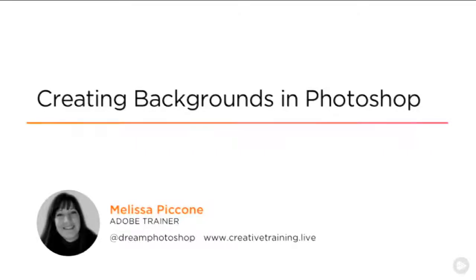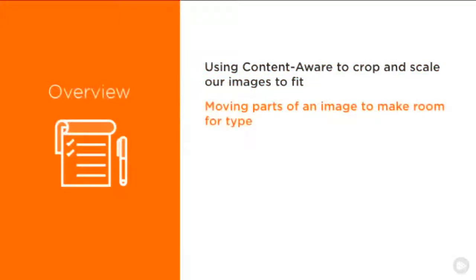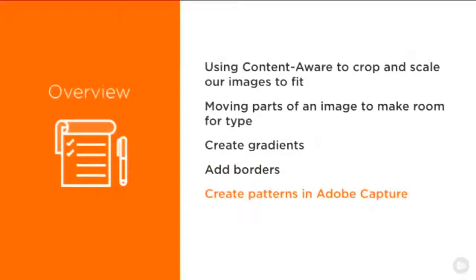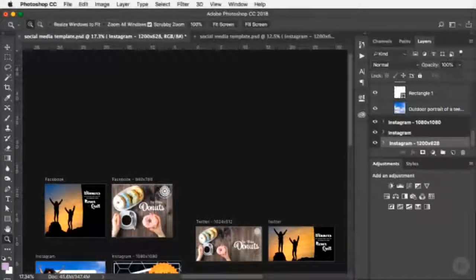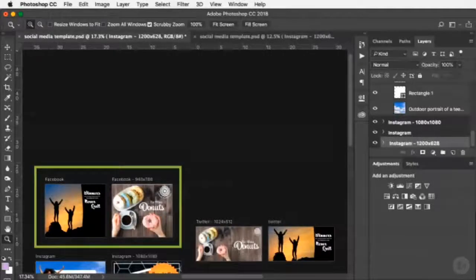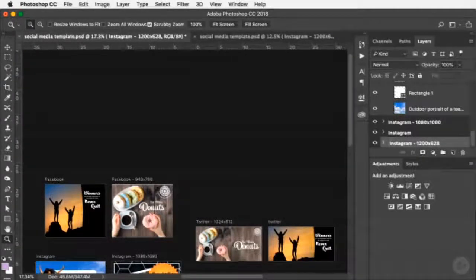Let's look at how to create backgrounds and prepare photos in Photoshop for social media graphics. We'll start with content-aware crop and scale to fit images within specified sizes, then look at moving parts of an image to make room for type, creating and using gradients, adding borders, and creating patterns with Adobe Capture. The challenge: I have the same images needed in both a square format and a longer rectangle format.